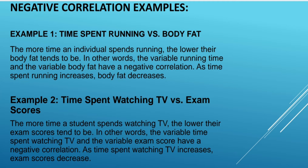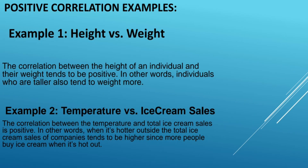Next, positive correlation examples. Example 1: height versus weight. The correlation between the height of an individual and their weight tends to be positive — individuals who are taller also tend to weigh more. Example 2: temperature versus ice cream sales. The correlation between temperature and total ice cream sales is positive — when it is hotter outside, total ice cream sales tend to be higher, since more people buy ice cream when it's hot.